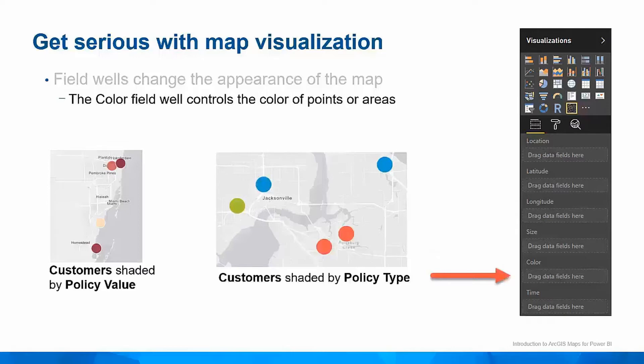If you want to show differences in locations using color, you can use the Color field well. You can use numerical or categorical data to shade points or areas. Numerical data will result in a color ramp showing low values using white colors and high values using dark colors. An example would be customer locations shaded by the value of their policy. You could also group locations together by using the same color for shared text attributes. I've used the Policy type field in my data to show auto policies in red, home policies in blue, and commercial policies in green.